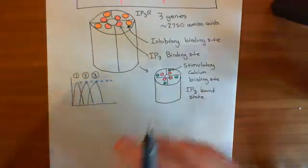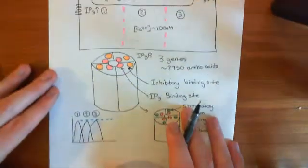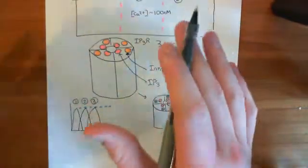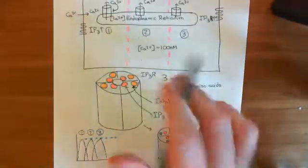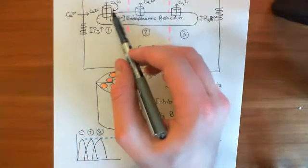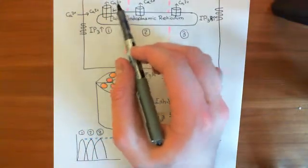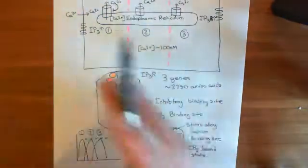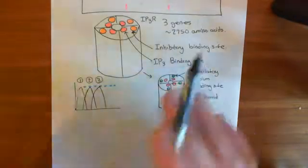That's a single calcium wave, and that explains the calcium wave pretty much perfectly. This negative feedback of calcium explains the IP3 receptors closing and explains everything going down.